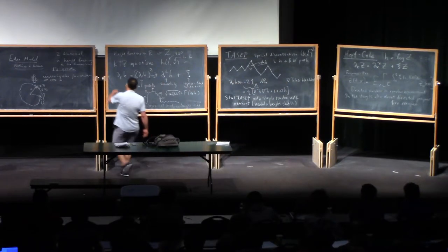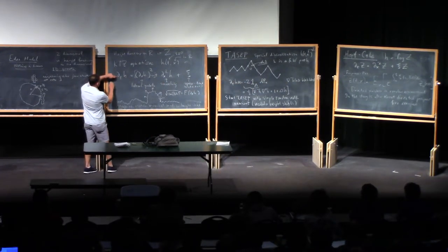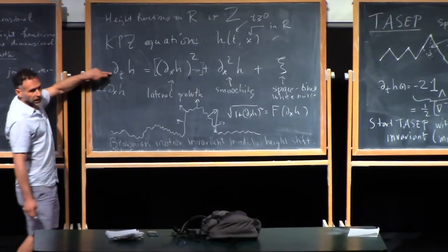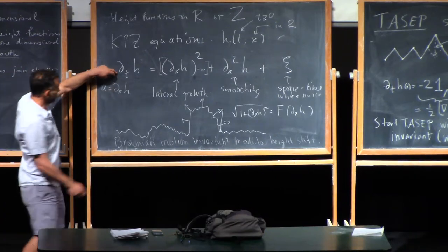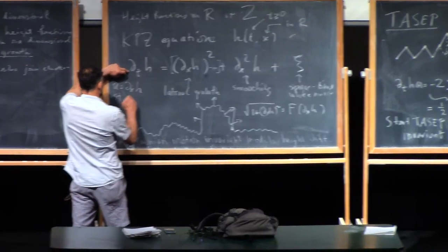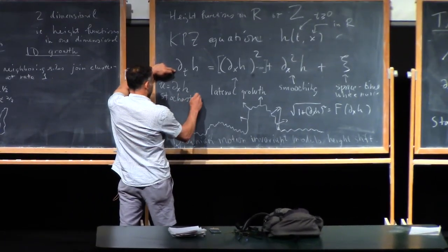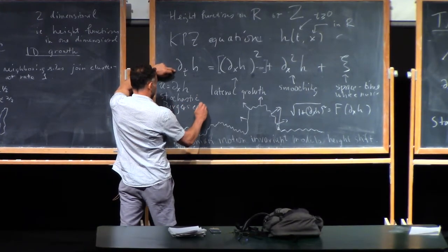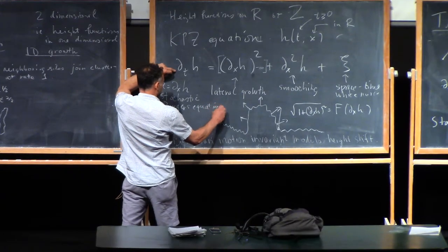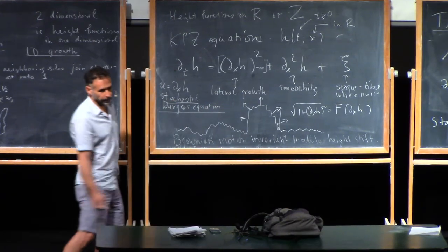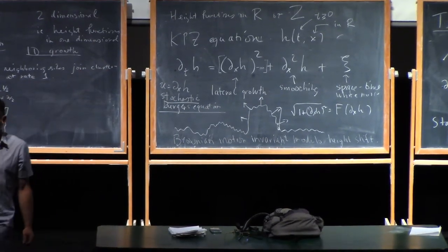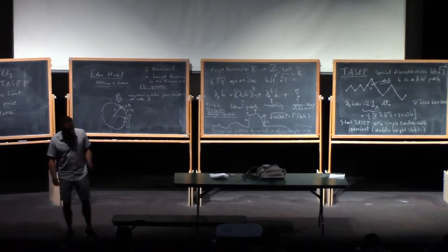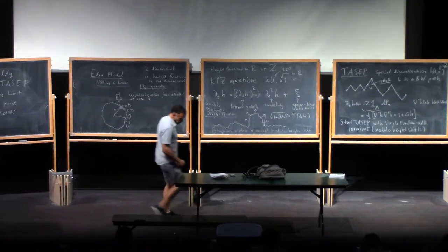There are lots of other models. For example, if you take u = ∂_x h, it satisfies a noisy Burgers equation. You can think of these things as random fluids as well — there are a lot of different interpretations of these models.